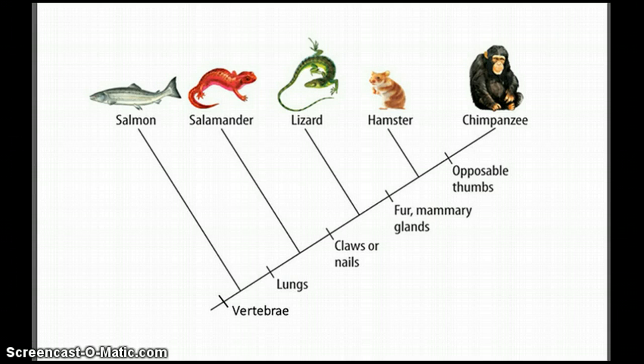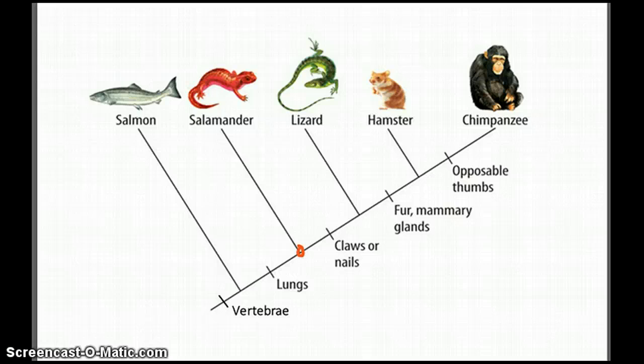The whole purpose of placing organisms in a cladogram is that it allows us to trace evolutionary relationships. The points where the lines connect represent a common ancestor.